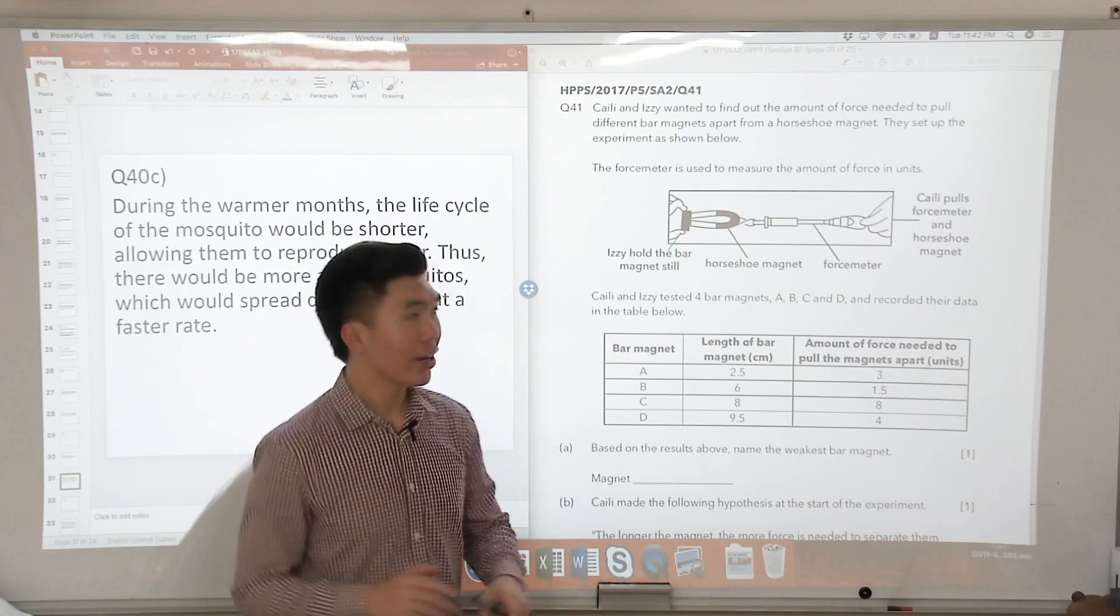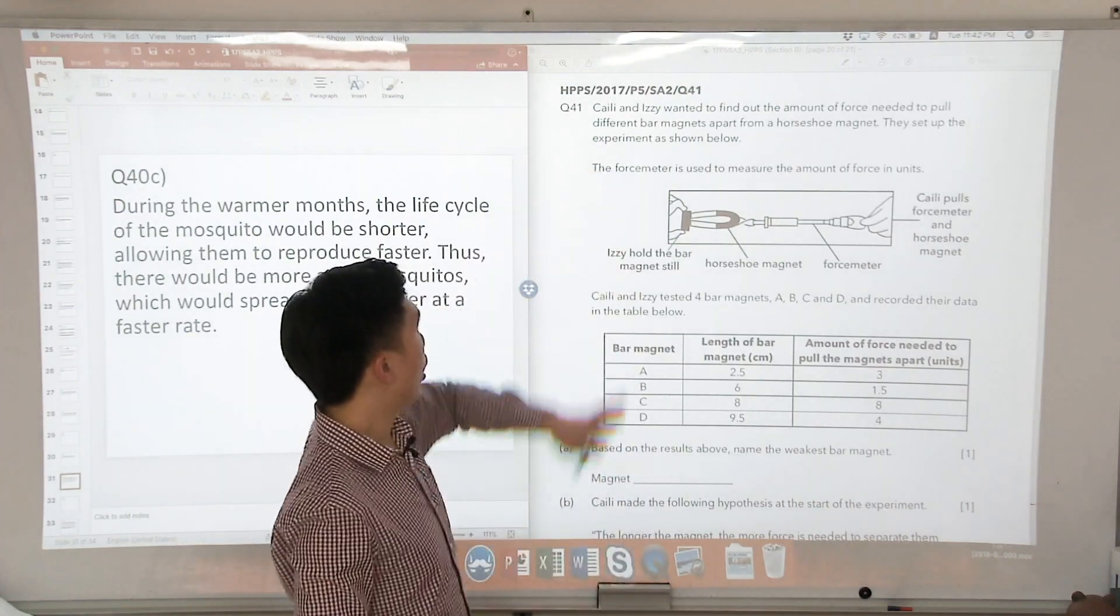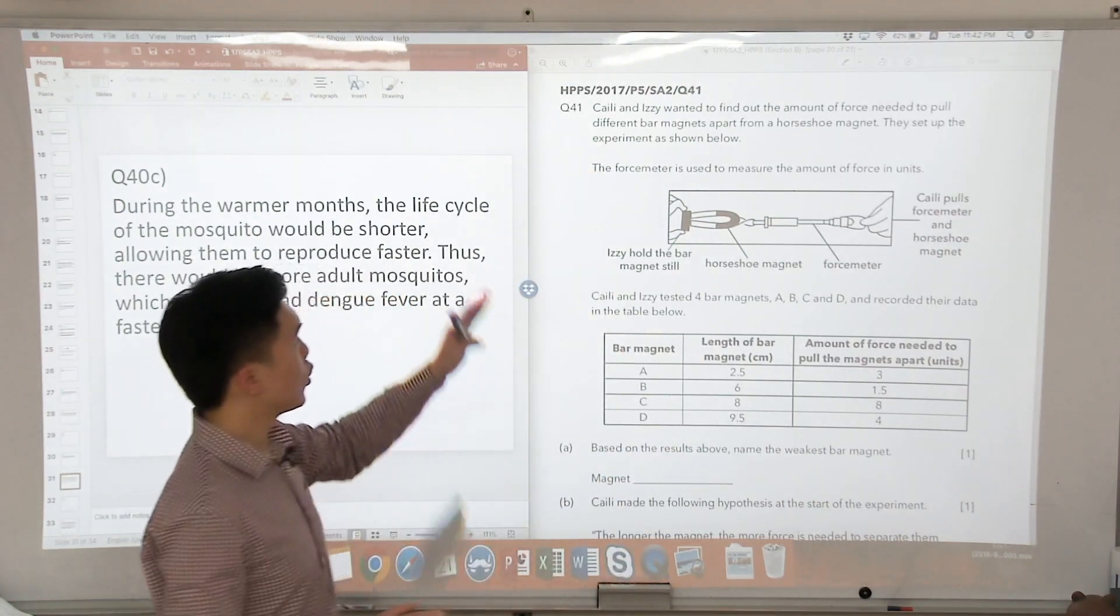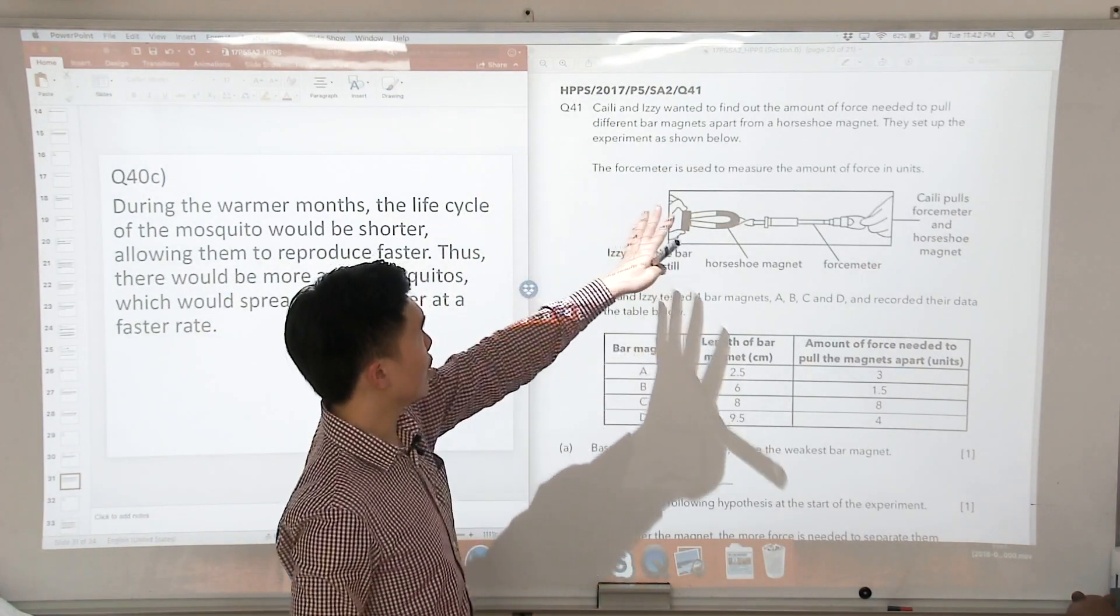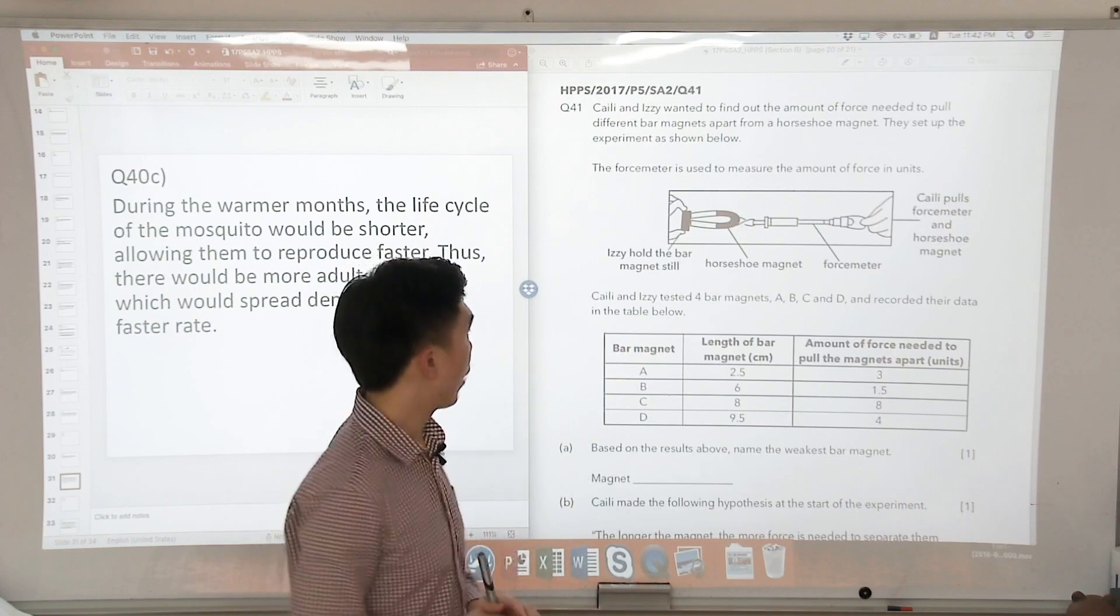Okay, so now let us look at our final question, question 41. Kylie and Easy wanted to find out the amount of force needed to pull different bar magnets apart from a horseshoe magnet.